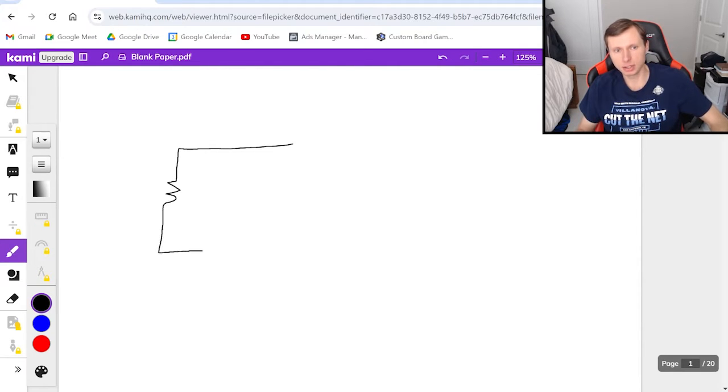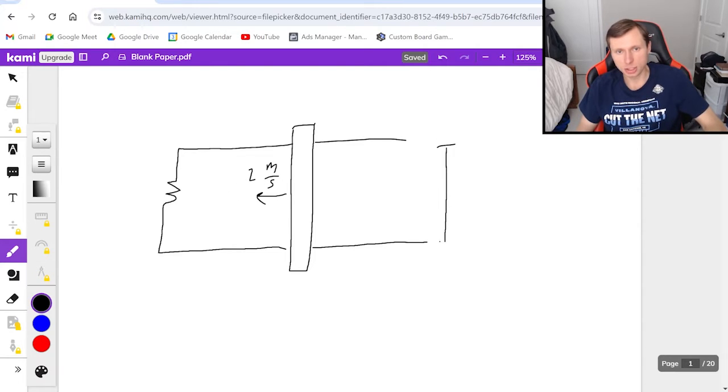So the problem might look something like this. I have a metal wire here and then I have a metal bar laying across it that's moving this way to the left with a velocity of 2 meters per second. The width of this section of wire is 4.5 meters.